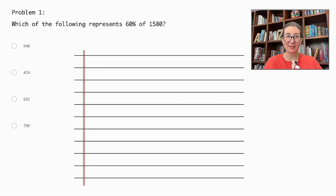Problem number one. Which of the following represents 60% of 1580? 948, 474, 632 or 790? Let's do the math.